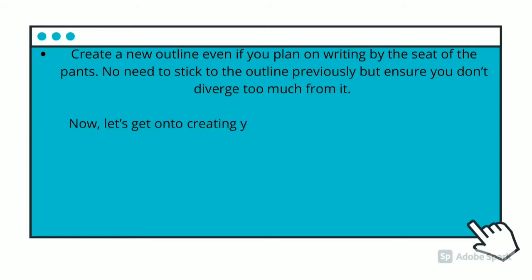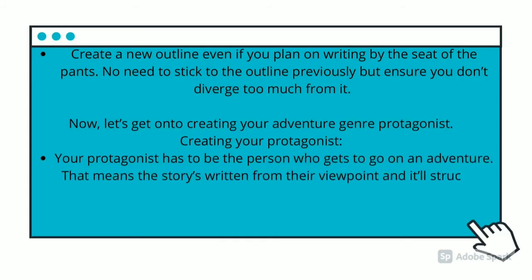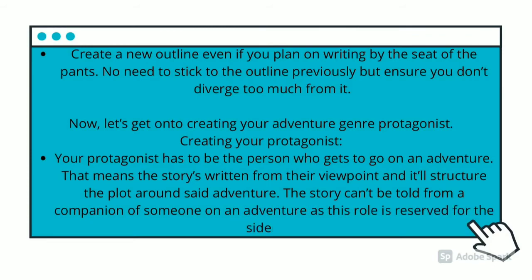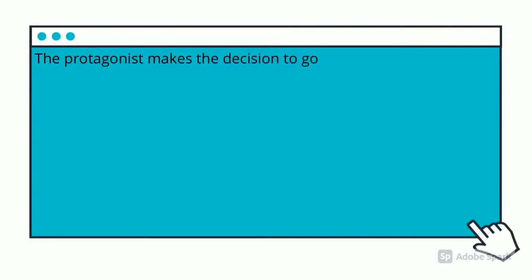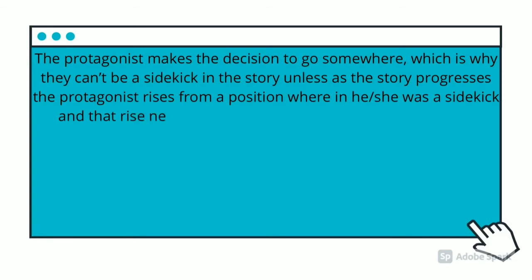Now let's get on to creating your adventure protagonist. Your protagonist has to be the person who goes on the adventure. That means the story is written from their perspective and the plot is structured around that adventure. The story can't be told from the viewpoint of a companion — that role is reserved for the sidekick. The protagonist makes the decision to go somewhere, which is why they can't be a sidekick. Unless, as the story progresses, the protagonist rises from a position where they were a sidekick — and that rising needs to happen at the beginning of the novel.